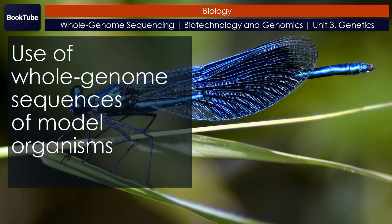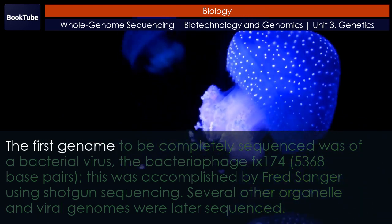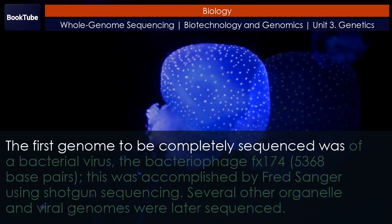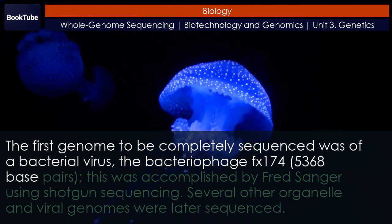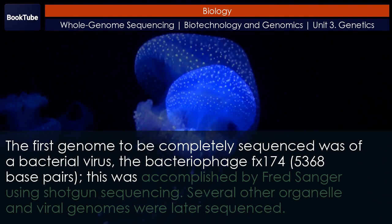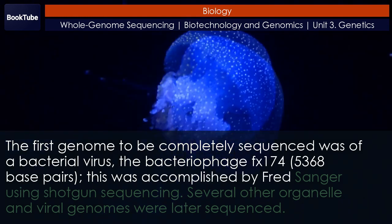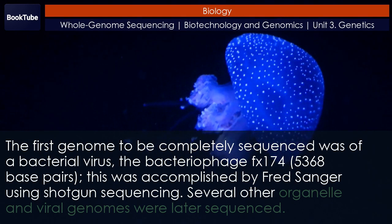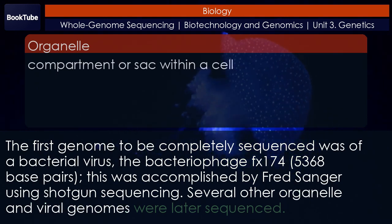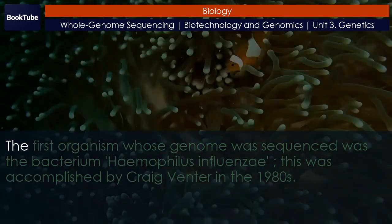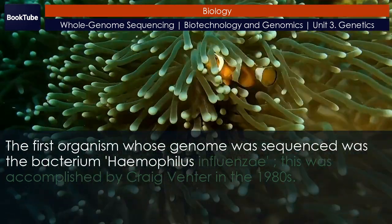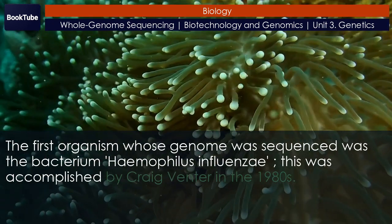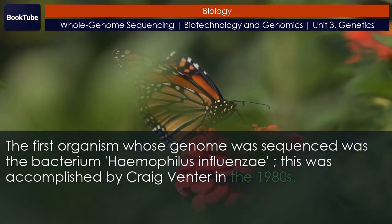Use of Whole Genome Sequences of Model Organisms. The first genome to be completely sequenced was that of a bacterial virus — the bacteriophage ΦX-174, at 5,368 base pairs. This was accomplished by Fred Sanger using shotgun sequencing. Several other organelle and viral genomes were later sequenced. The first organism whose genome was sequenced was the bacterium Haemophilus influenzae, accomplished by Craig Venter in the 1980s.